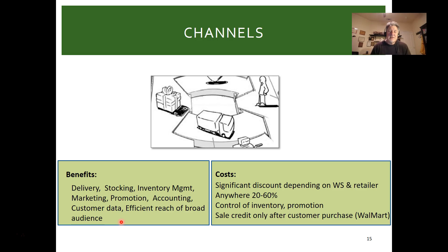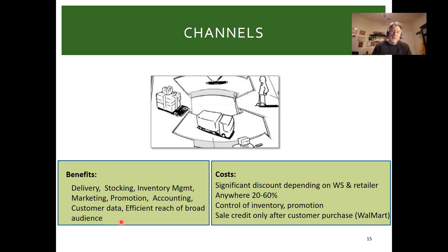Using a channel comes at a cost — anywhere from 20 to 60% off your top-line price. You also lose control of inventory and promotion. For example, Walmart doesn't give you sales credit until customers actually purchase, so there's no ex-factory sale until the customer buys. Walmart makes you carry the inventory costs on your balance sheet — which is brilliant for them.